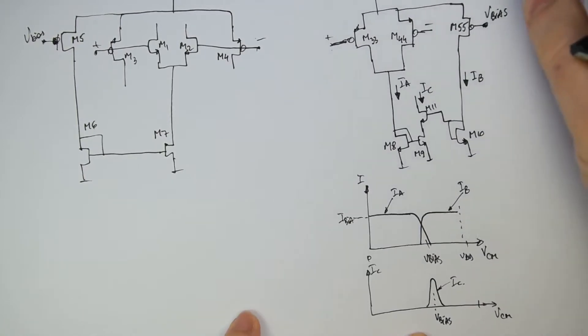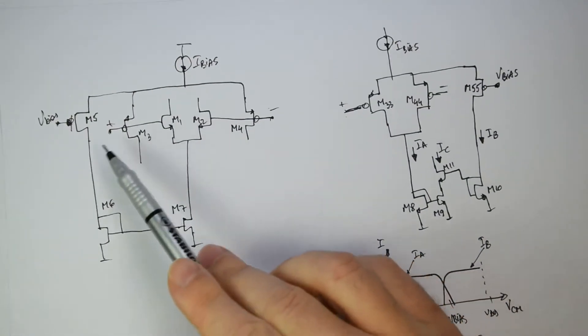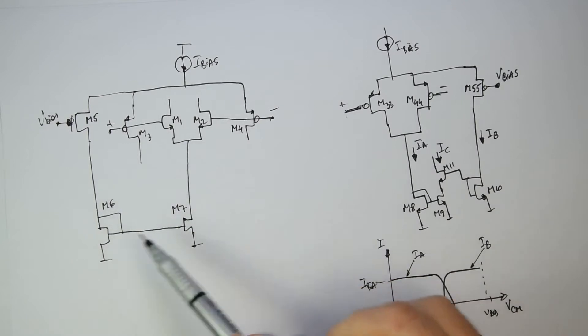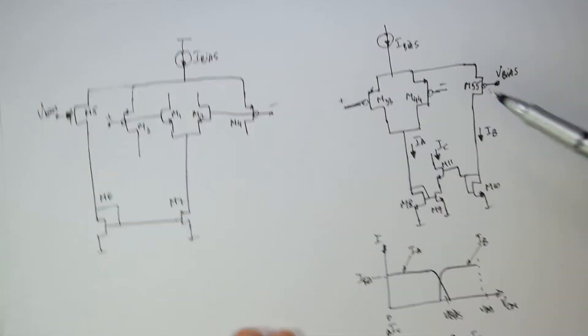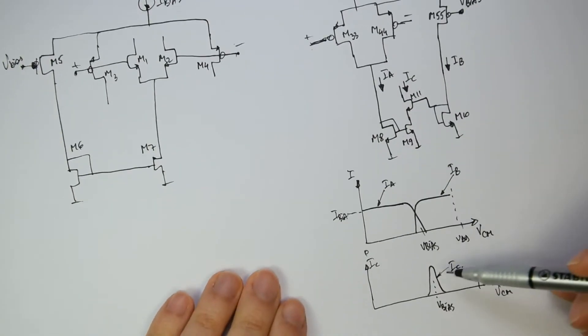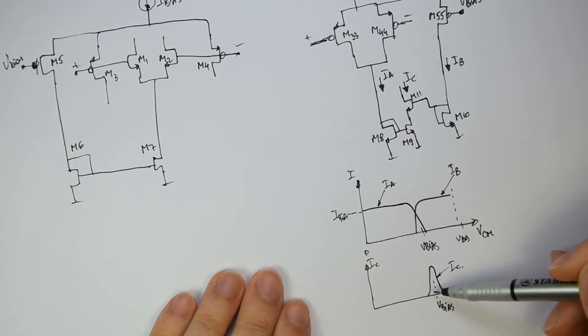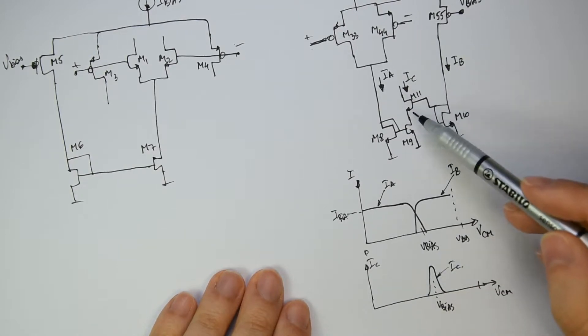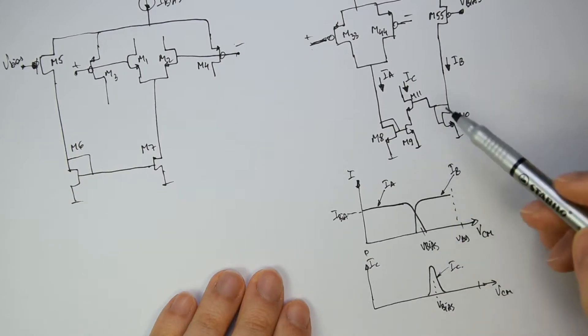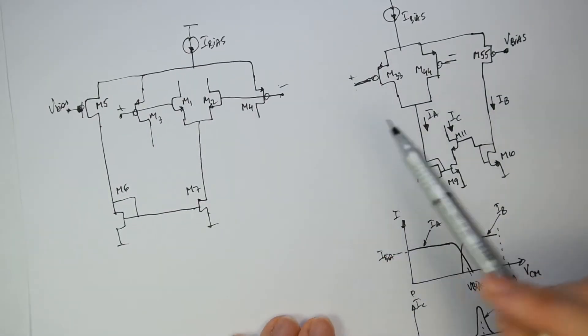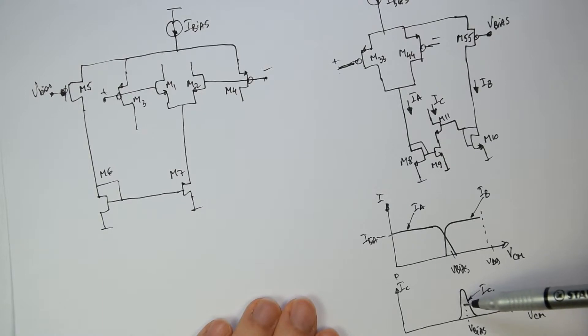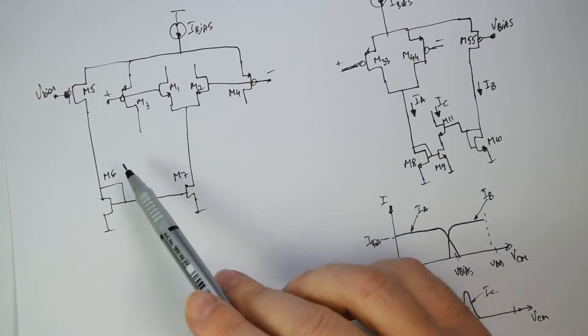And with this schematic, which is actually a replica of our input differential pair, with this schematic we detected the moment when we have the transition. And we generated a current that is exactly appearing in the moment of the transition. And more important, since everything is matching, this current is exactly what we need to compensate our main circuitry.